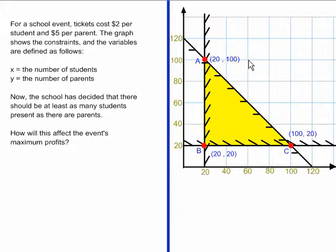The first thing you have to do is define the optimization function. If tickets cost $2 per student and $5 per parent, and students are X and parents are Y, then the optimization function is 2X plus 5Y equals Z.